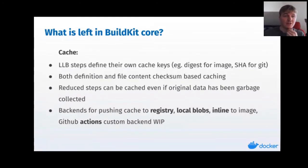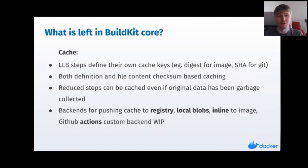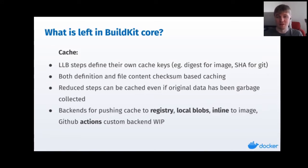The caching is completely different from the old caching, which was some weird comparison of image configurations and things like that. It's much more well-defined now — we have definition-based caching and also file checksum-based caching working together. We have a backend interface for building new cache backends, so there's not only local cache: you can have your cache in a registry, in local blobs, or inline. We'll add more cache backends in the future. This is how you can, for example, maintain cache when doing CI builds, or generate your cache in CI and have other users use it.